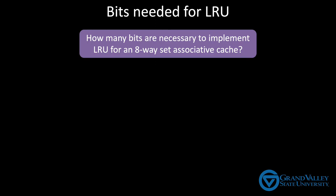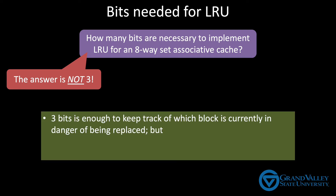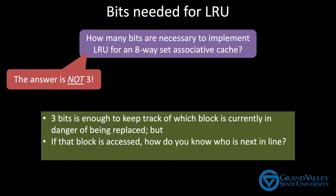Let's think about how many bits are needed to implement LRU for an eight-way set associative cache. And I'll give you a hint — it's not three. Three bits is enough to identify a specific block, like to say this is the block you're going to kick out next. But you need to store more data than that, because if the next access happens to be to that block, then how do you know which block is next in line to get kicked out?